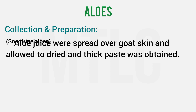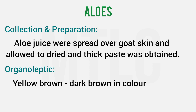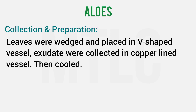Collection and preparations are as follows: you cut the drug plant and collect the juice. If you want to extract it, you extract it. You can use a goat or sheep skin and spread the juice from the leaves. If you want to evaporate it, it becomes a pasty substance. Then you can dry it. For curacao aloes, the leaves are cut into a V-shaped vessel.